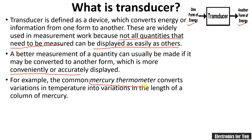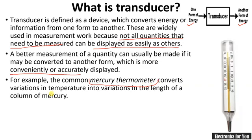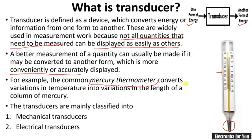For example, a common mercury thermometer converts the variation of temperature into length. This is a simple type of transducer which converts temperature into length.